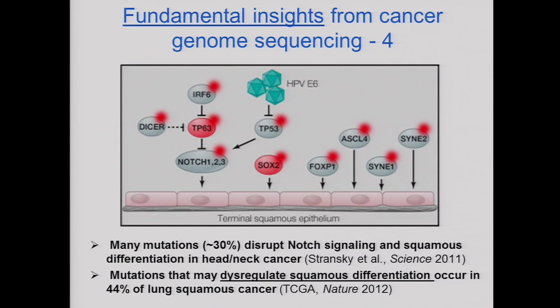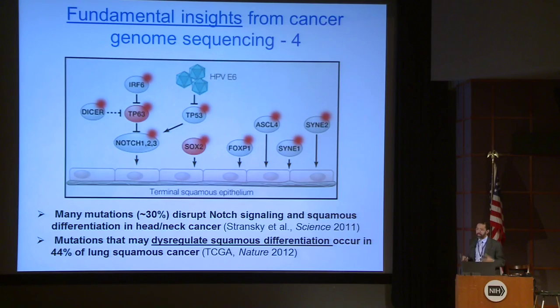The final cross-cutting insight I'll mention is that in squamous malignancies — head and neck squamous carcinoma, lung squamous carcinoma, cervical squamous carcinoma — there are a whole series of mutations, often in 30 to 40 percent of cases, that disrupt squamous differentiation. The concept of maturation arrest is actually a very old one in cancer; most translocations discovered in leukemia by karyotypic analysis affect transcription factors that arrest maturation of a hematopoietic lineage. Now the idea of maturation arrest is gaining traction in solid tumors, in large part because of cancer genome sequencing.